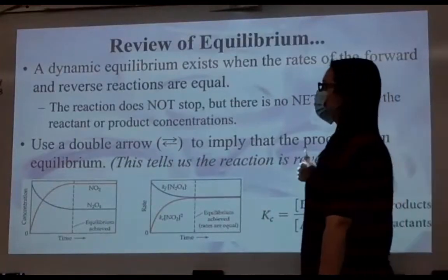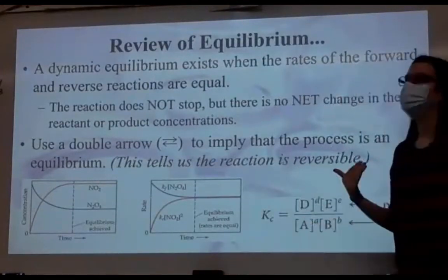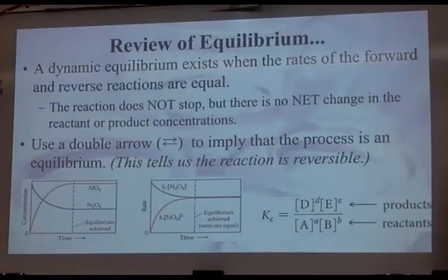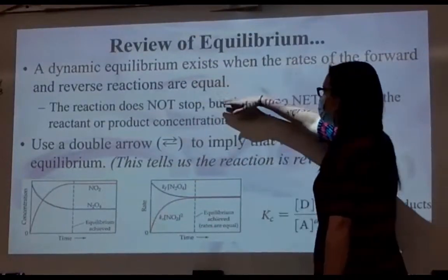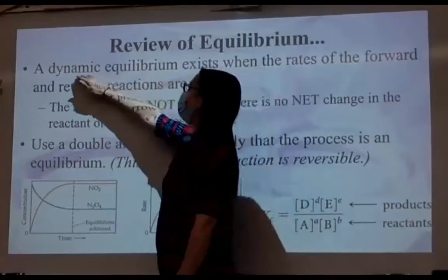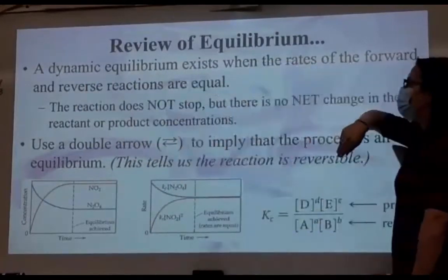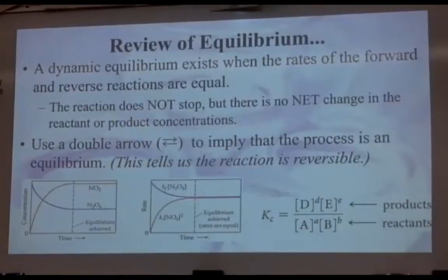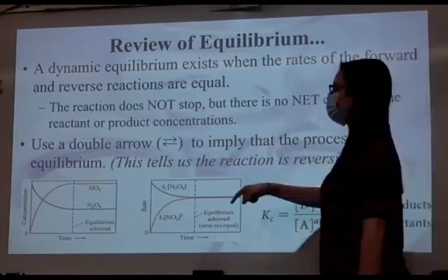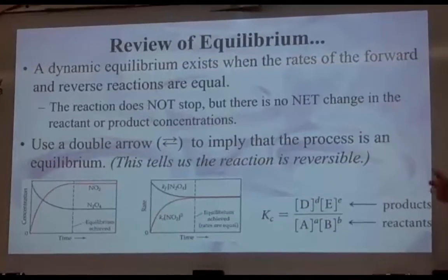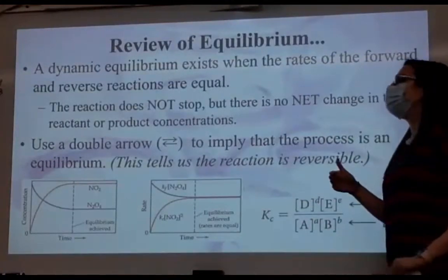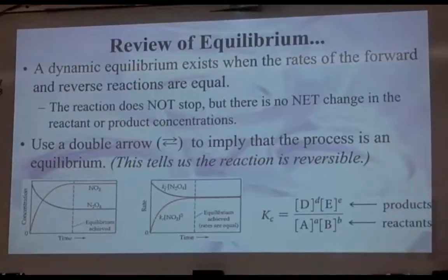This chapter is general equilibrium where we look at Kc and Kp — concentration and pressure. When we talk about equilibrium, we call it a dynamic equilibrium. A dynamic equilibrium exists when the rates of the forward reaction and the reverse reaction are equal. In kinetics we had that double arrow, and we used the idea that the rates of the forward and reverse reaction are equal.